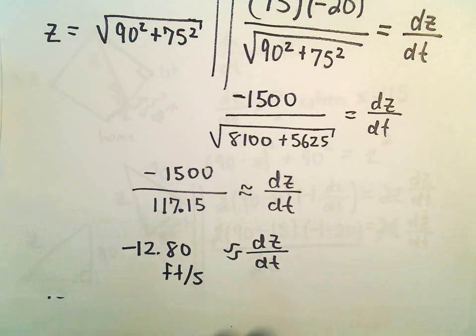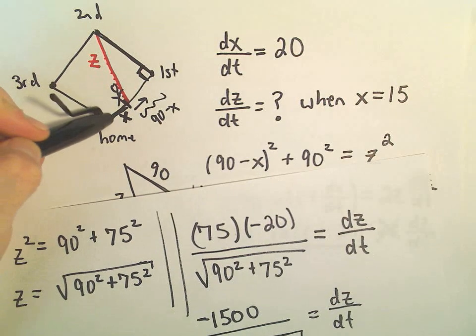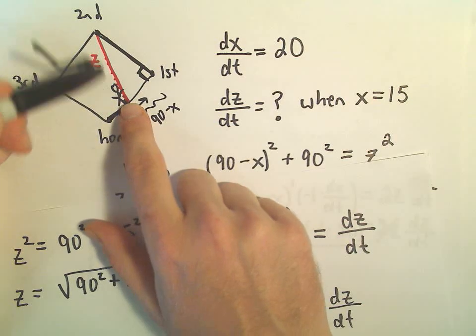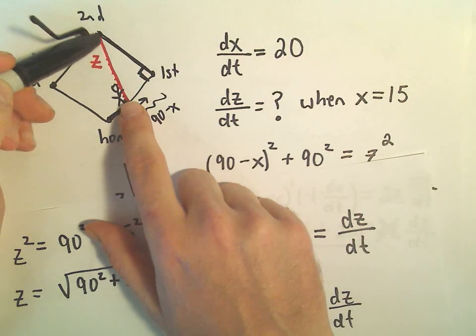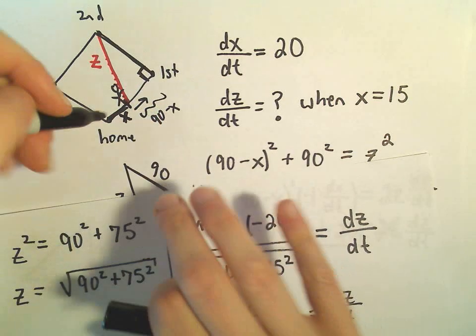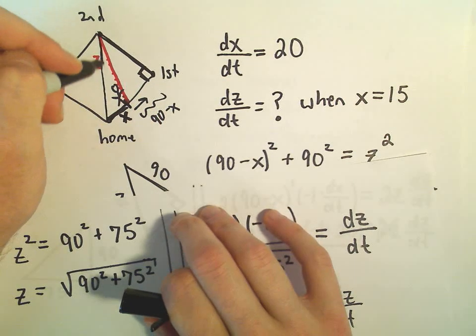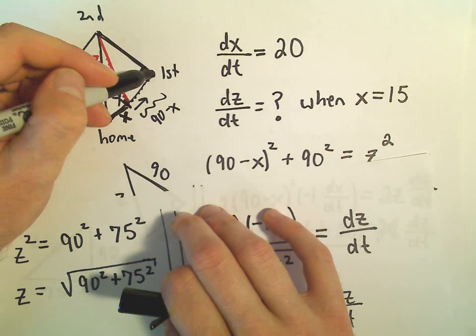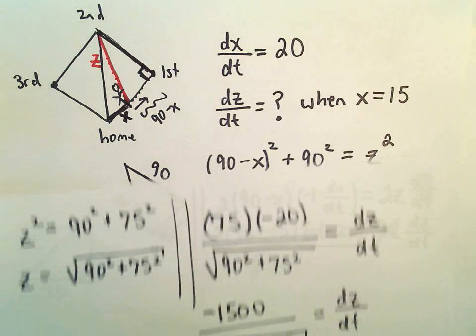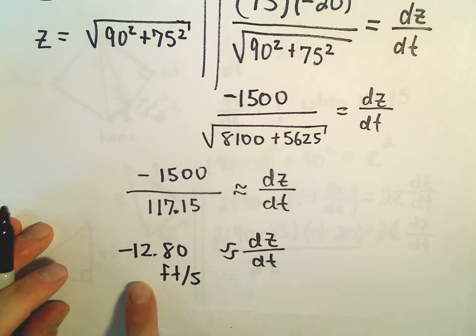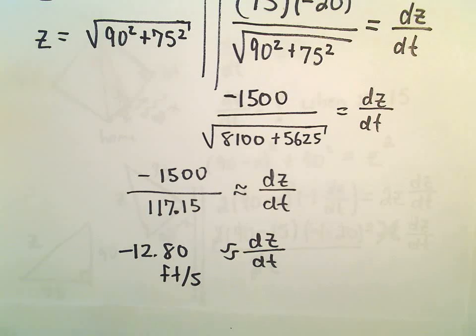And it makes sense that this is negative because as the person runs from home plate towards first base, the distance between the runner and second base is actually decreasing at that time. So when you're at home, you're kind of the furthest away you would be from second base. And by the time you get over to first base, you're certainly closer to it. So that's all the negative indicates is that the person is in fact getting closer to second base. We'll see you next time.